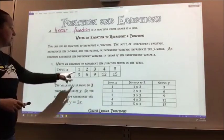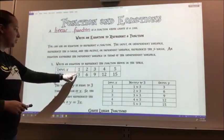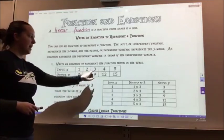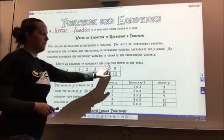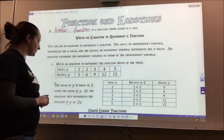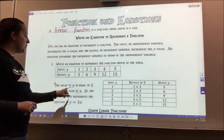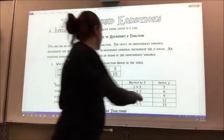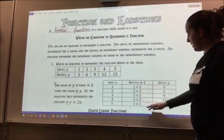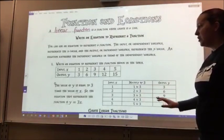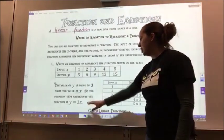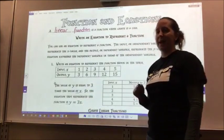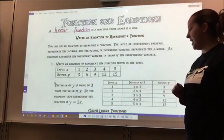You can also see that I'm multiplying 1 times 3 to get 3, 2 times 3 to get 6, 3 times 3 to get 9, 4 times 3 to get 12, and 5 times 3 to get 15. So the value of y is equal to 3 times the value of x. The equation that represents the function is y equals 3 times my input value, or 3 times x.